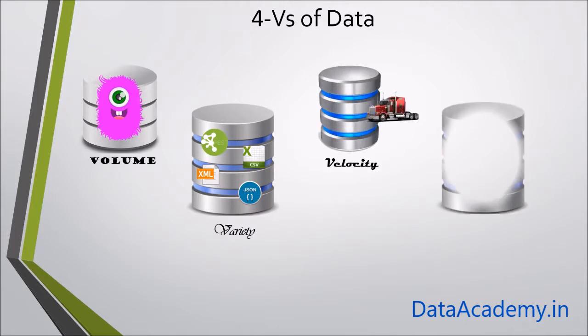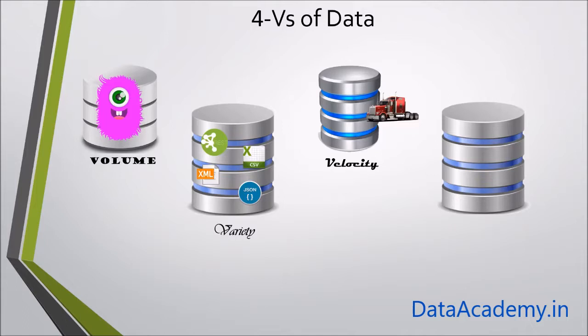The third V is the velocity of data. The data coming in is arriving at a very high velocity — we are talking about millions of records that need to be processed and stored into the system. Finally, the fourth V is veracity, meaning sometimes the data is not complete. Some parts of the data may come today and the remaining parts may come tomorrow, so you often don't have the complete picture.